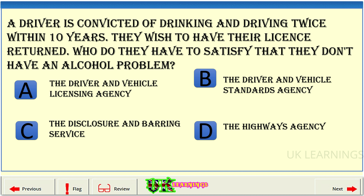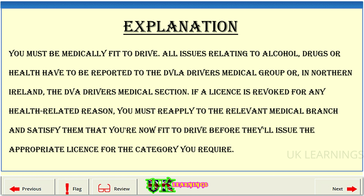A driver is convicted of drinking and driving twice within 10 years. They wish to have their license returned. Who do they have to satisfy that they don't have an alcohol problem? A: the Driver and Vehicle Licensing Agency. B: the Driver and Vehicle Standards Agency. C: the Disclosure and Barring Service. D: the Highways Agency. The correct answer is A: the Driver and Vehicle Licensing Agency. Explanation. You must be medically fit to drive. All issues relating to alcohol, drugs, or health have to be reported to the DVLA Drivers Medical Group, or in Northern Ireland, the DVA Drivers Medical Section. If a license is revoked for any health-related reason, you must reapply to the relevant medical branch and satisfy them that you're now fit to drive before they'll issue the appropriate license for the category you require.